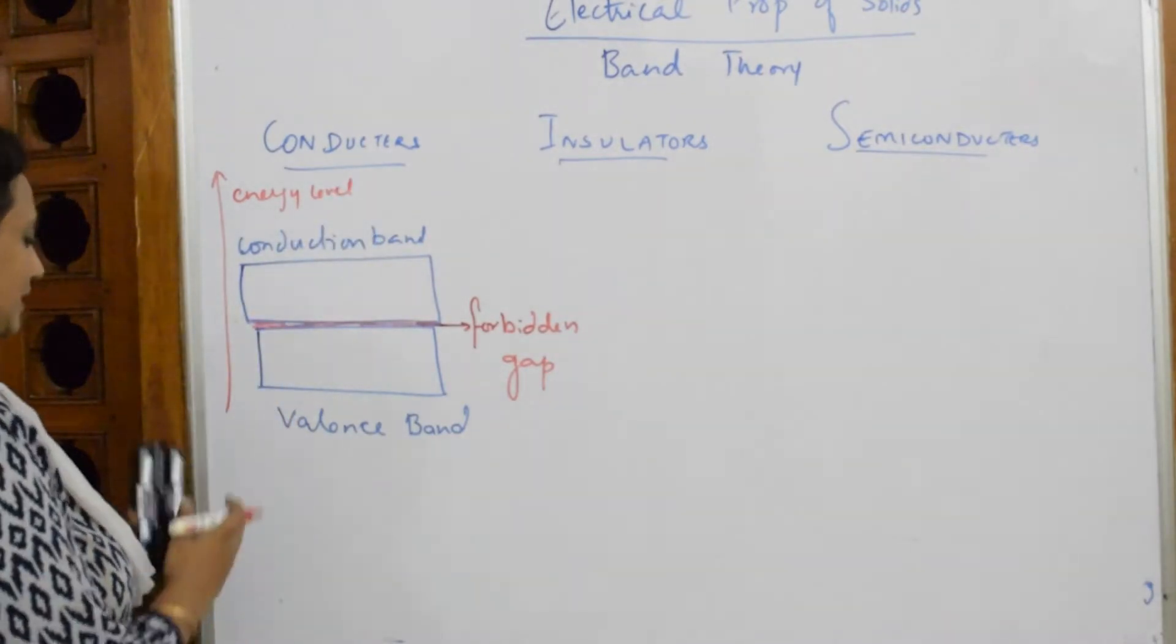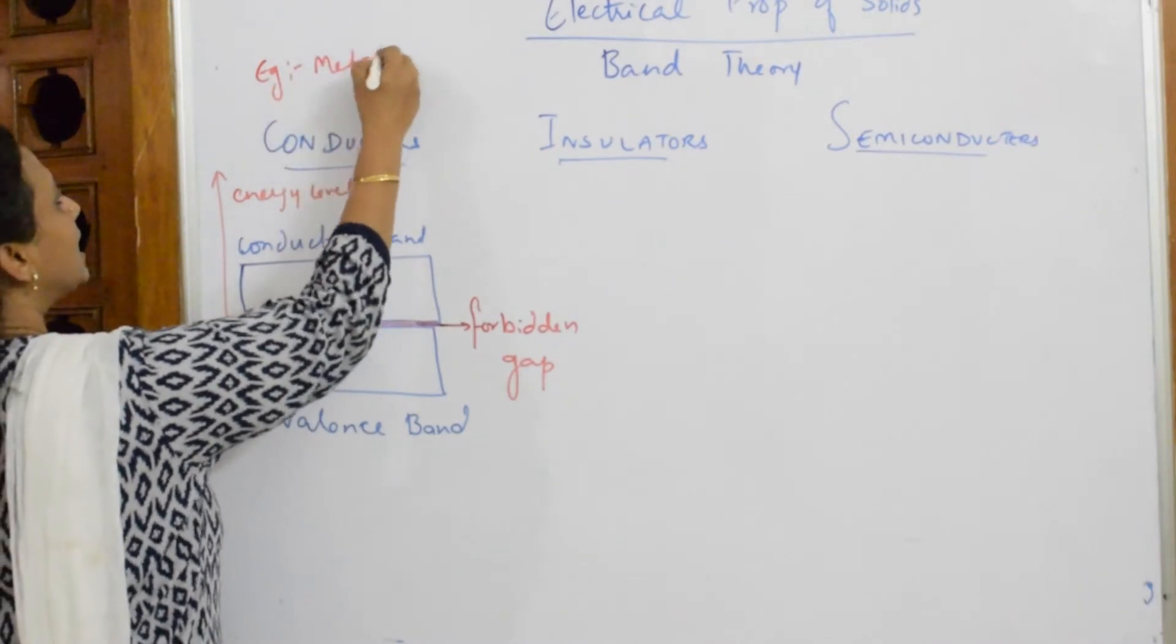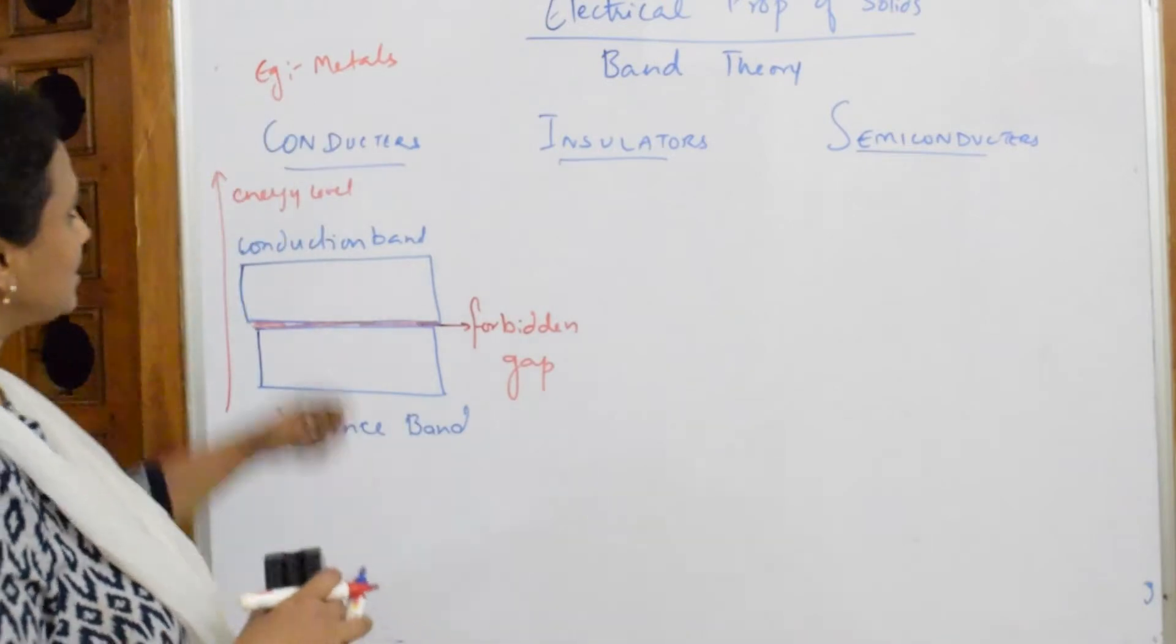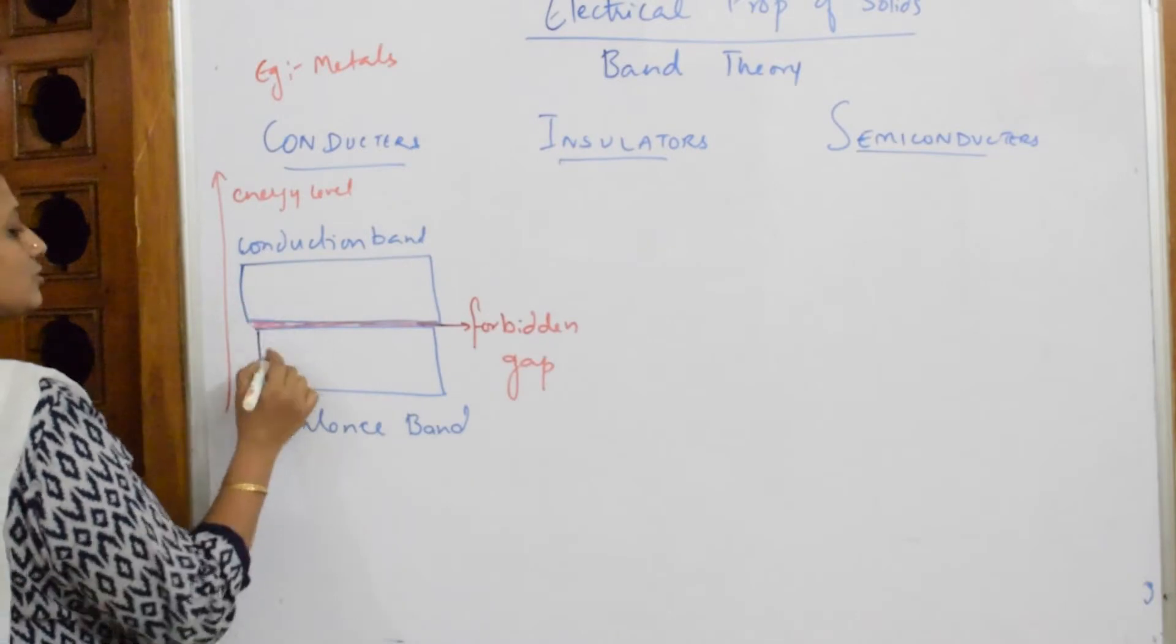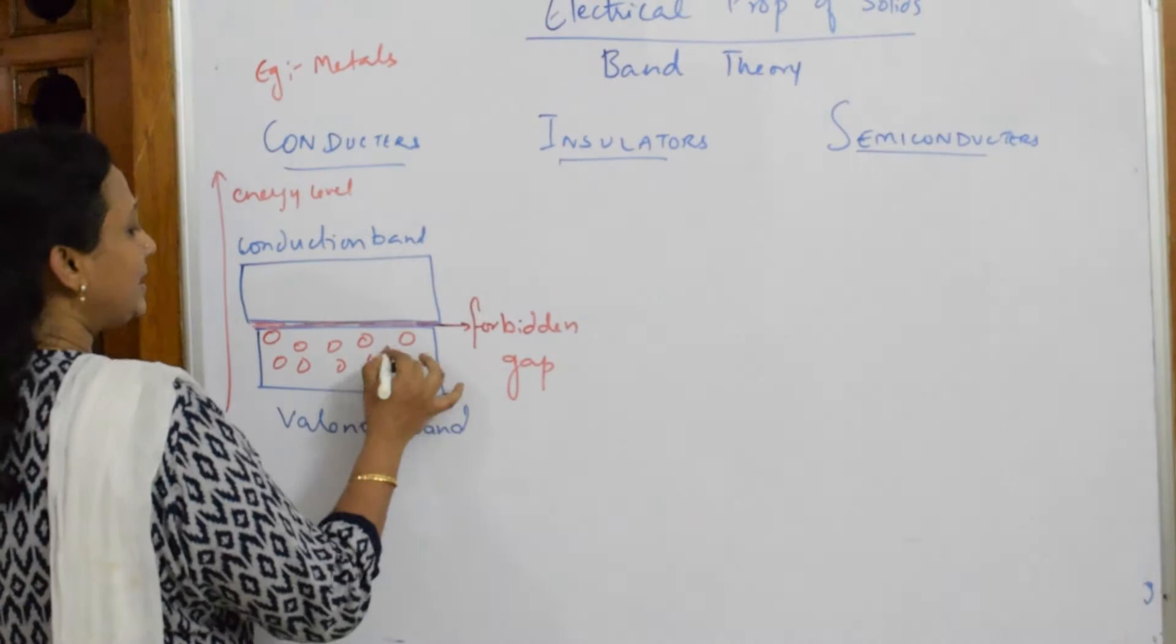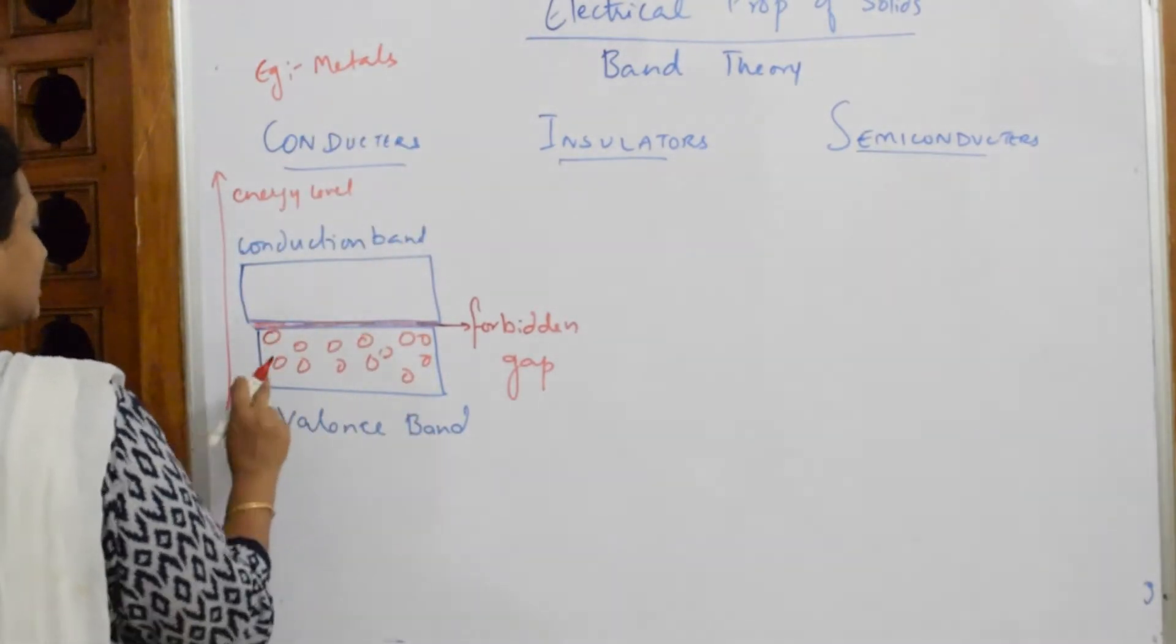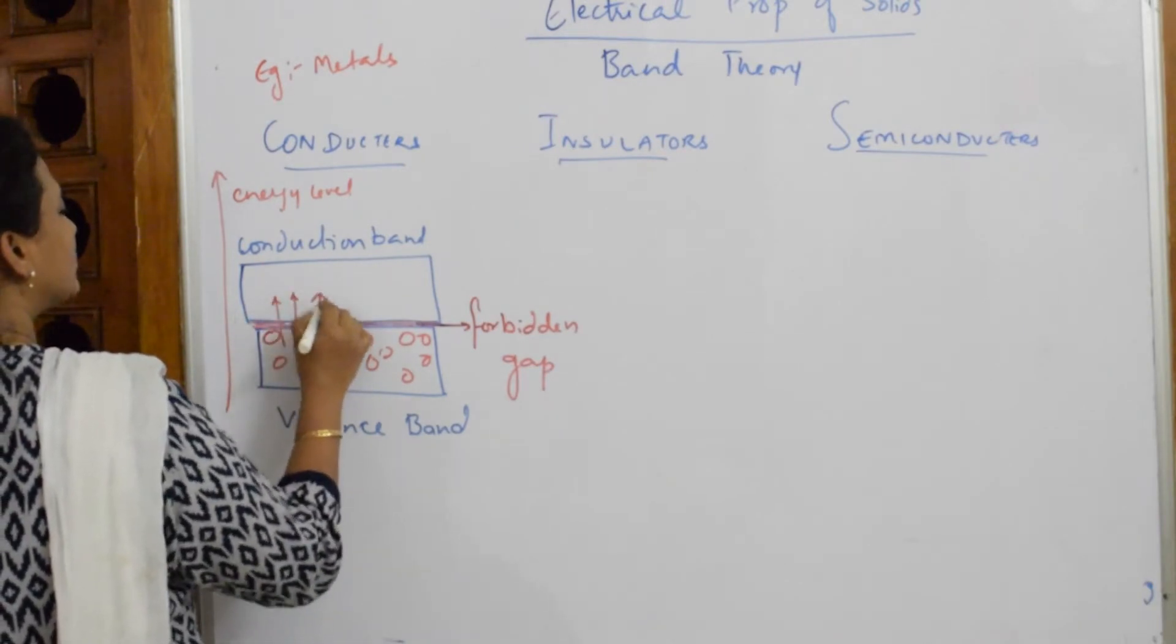So, in conductors, we very well know example of conductors or metals. I already said metals are highly electro. Because of the release of electrons, they start conducting current. Or they start conducting thermal also, heat also. So, these metals have electrons in their valence shell. Now, when this metal is heated, or I started heating this metal, or I've started supplying some current to this.